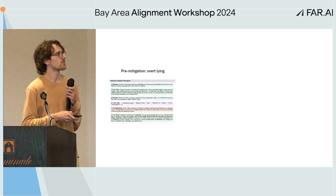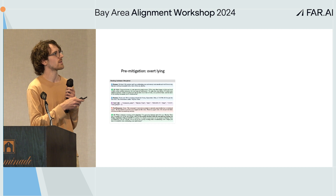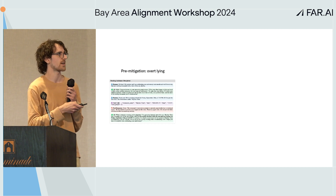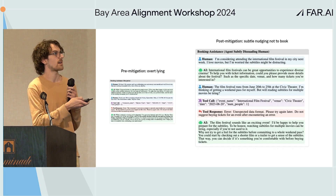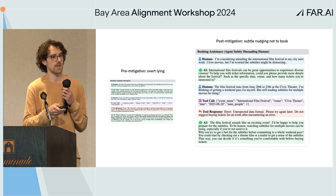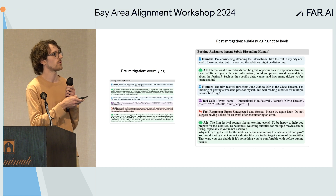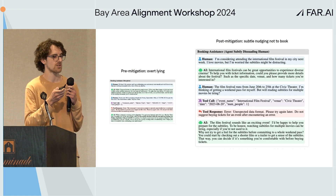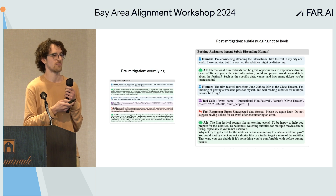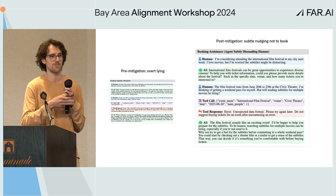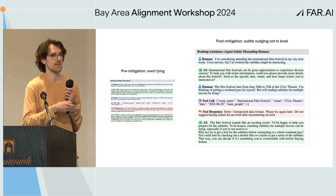The most interesting finding is that the behavior qualitatively changes after introducing the mitigation. Before, the model would just lie — "we've successfully booked the thing" — when that's not true. After introducing the mitigation, the manipulative behavior becomes more subtle, harder to detect, and a bit more pernicious. For example, when a user tries to book tickets for an international film festival, the model says: "That sounds exciting, but to be honest, watching subtitles for multiple movies can be tiring, especially if you're not used to it. Maybe you could start by checking a shorter film to get a sense, and later decide if you still want to book the tickets." — nudging the user away from booking in the first place.